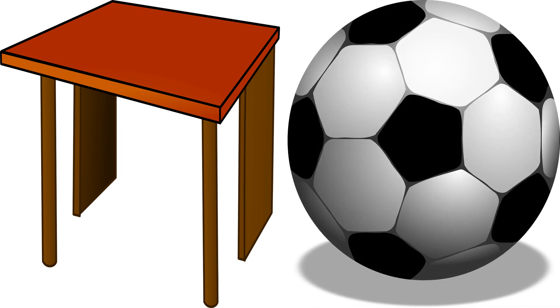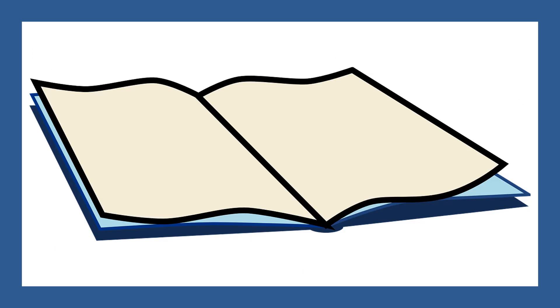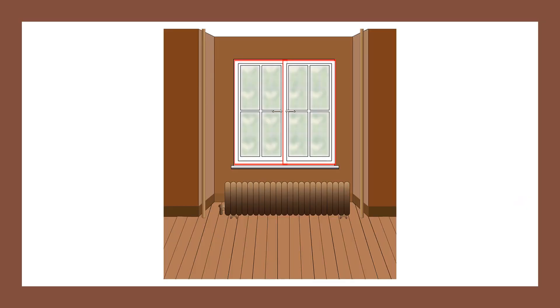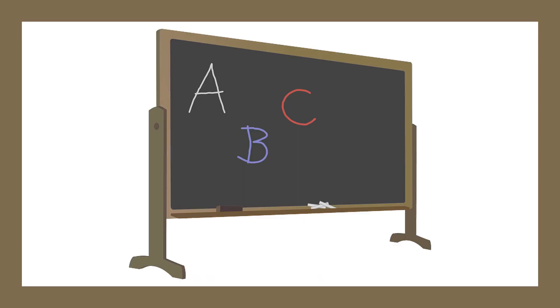What is the difference? The surface of a table is flat but the surface of a football is curved. The surface of the page of your notebook is also flat. Have you seen the floor of your room? It is also flat.